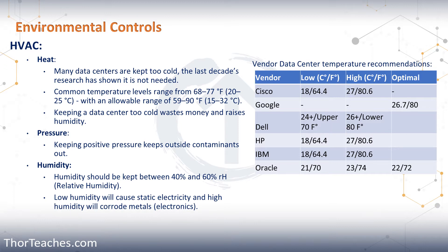Those are the optimal ranges, but they also have allowable ranges — where the equipment is going to keep functioning, but it is not super good for the equipment. They will deteriorate faster and not work optimally. Those ranges are between 59 and 90 degrees Fahrenheit, or 15 to 32 Celsius.